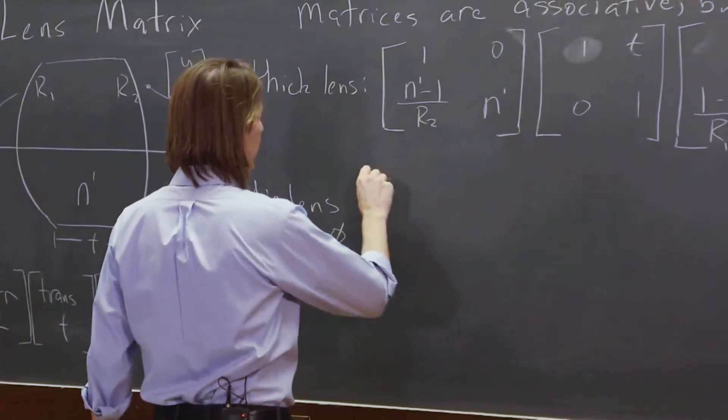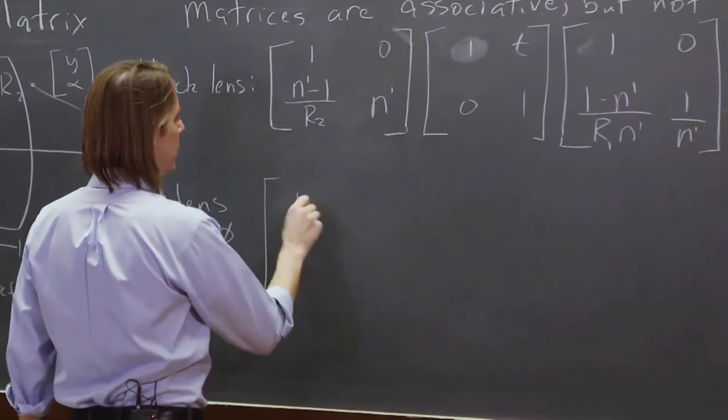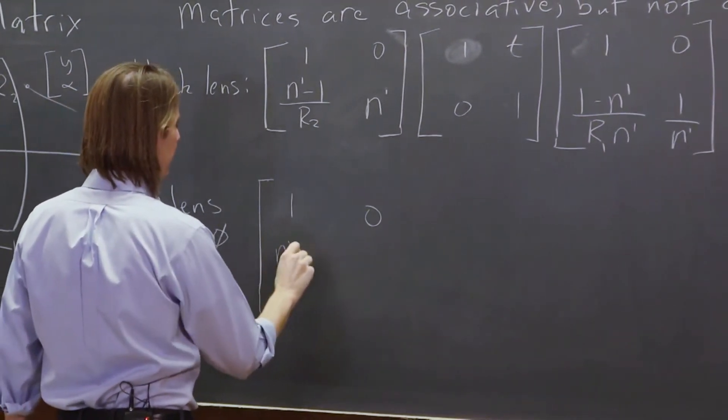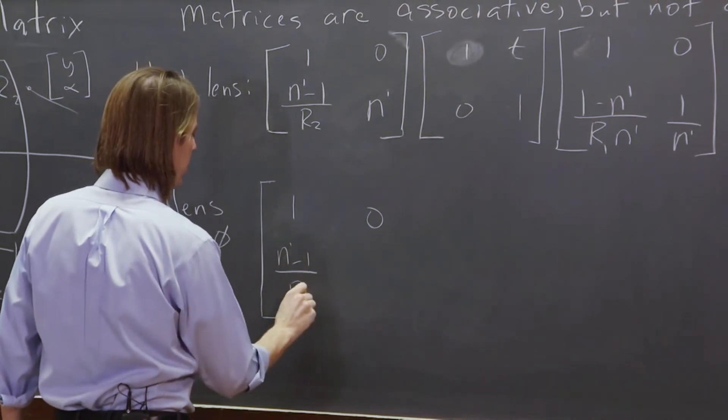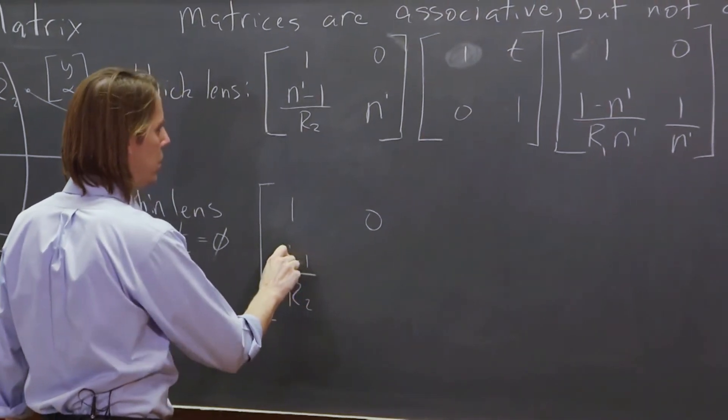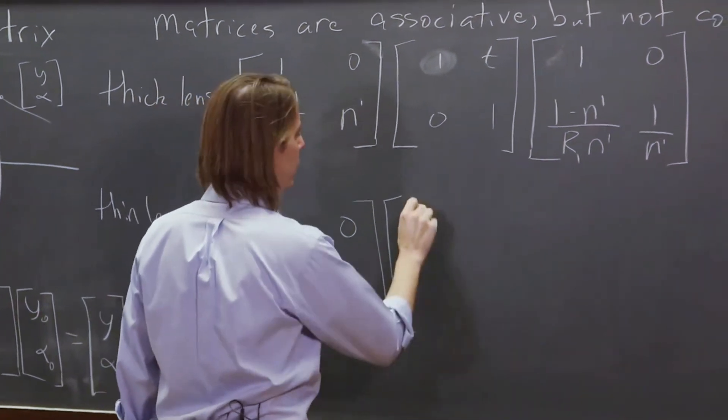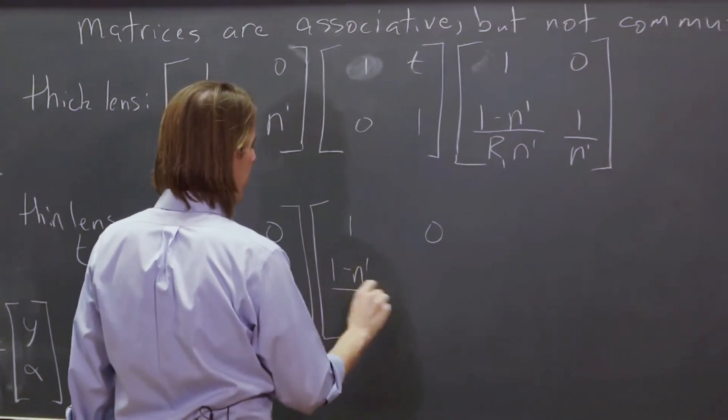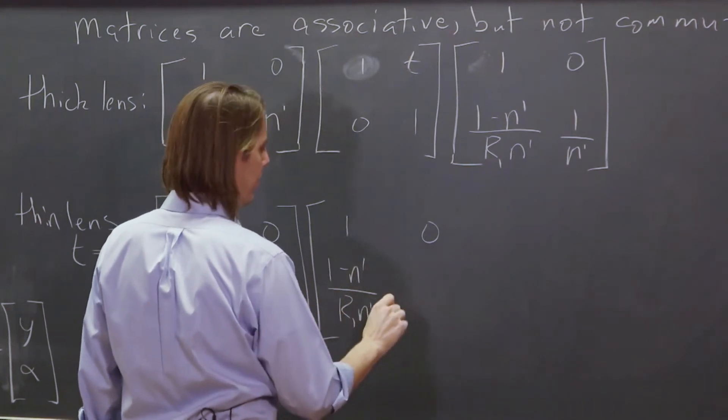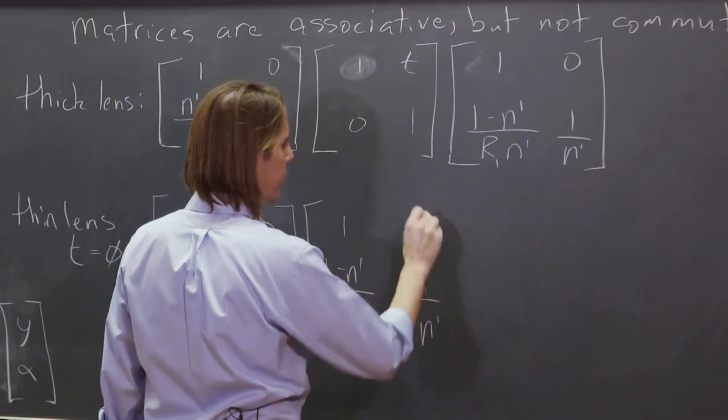So I can rewrite these real quick. 1, 0, n prime minus 1 over r2, n prime. And then 1, 0, 1 minus n prime over r1, n prime, 1 over n prime.